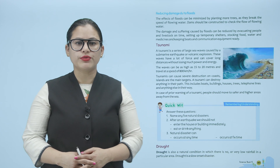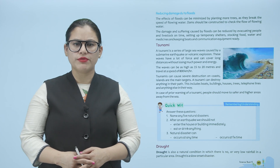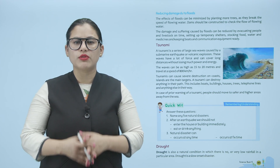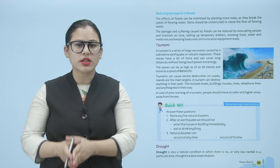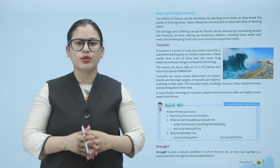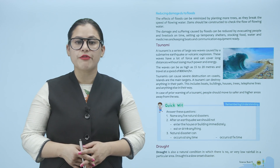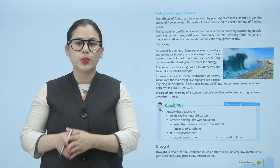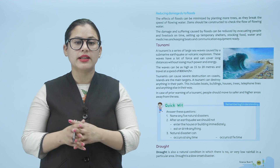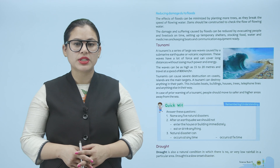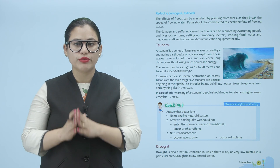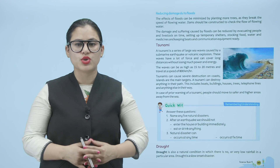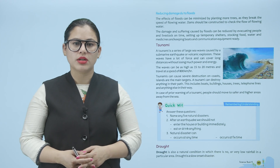Reducing damage due to floods: the effects of floods can be minimized by planting more trees, as they break the speed of flowing water. Dams should be constructed to check the flow of water. The damage and suffering caused by floods can be reduced by evacuating people and livestock on time, setting up temporary shelters, stocking food, water and medicines, and keeping boats and communication equipment ready.